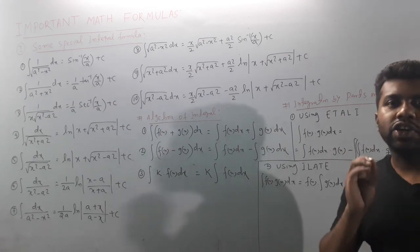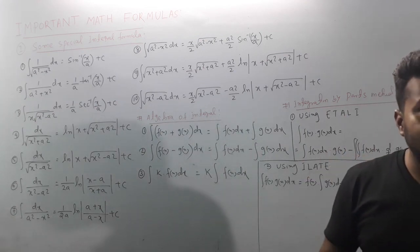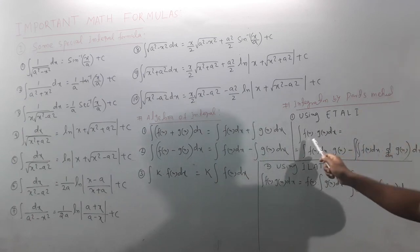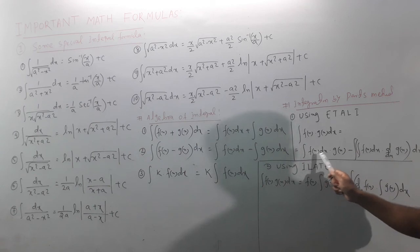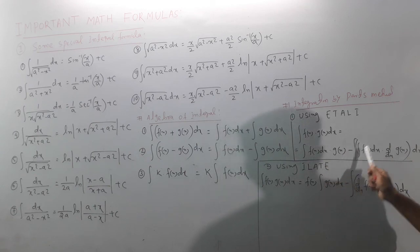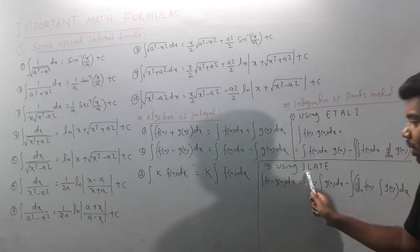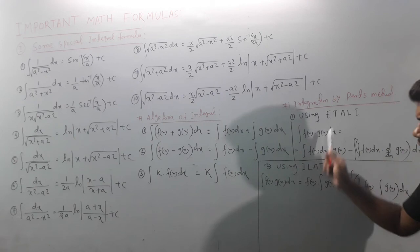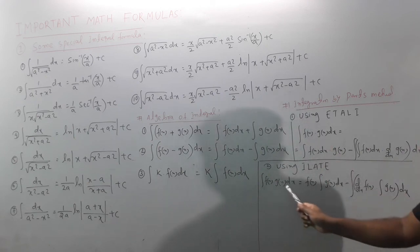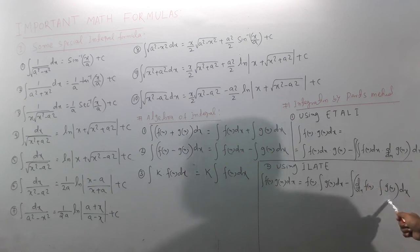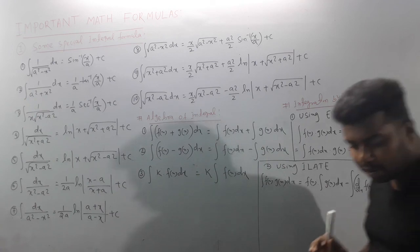For the by-parts formula: integration of f(x)·g(x) = first function × integration of second, minus integration of [derivative of first × integration of second]. In u·v form: ∫u·v dx = u·∫v dx - ∫[(du/dx)·∫v dx] dx. So: first × integral of second, minus integral of [derivative of first × integral of second].